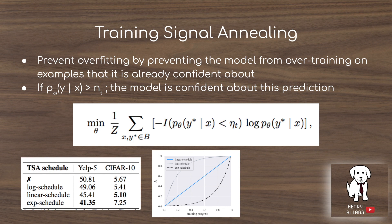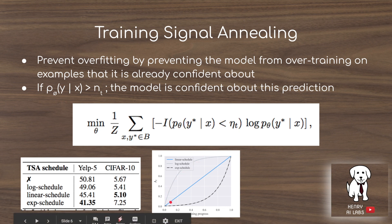A table shows different techniques for changing that confidence threshold: if the confidence of the prediction is less than the threshold, you don't train on it. These are different techniques for changing the threshold throughout training. They have a pretty wide variance, with the exponential schedule performing poorly and the linear schedule performing slightly better than no scheduling at all.